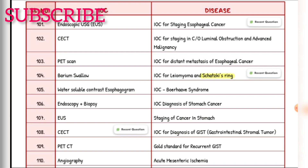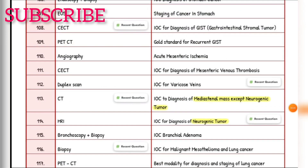Investigation of choice for leiomyoma and Schatzki's ring — barium swallow. Investigation of choice for Boerhaave syndrome — water-soluble contrast esophagogram. Investigation of choice for diagnosis of stomach cancer — endoscopy plus biopsy. Staging of cancer of stomach — EUS. Investigation of choice for diagnosis of GIST (gastrointestinal stromal tumor) — CECT. Gold standard for recurrent GIST — PET-CT.